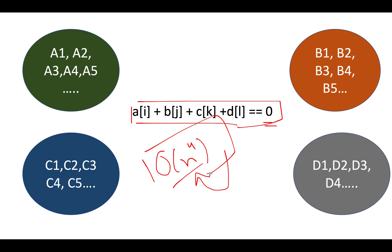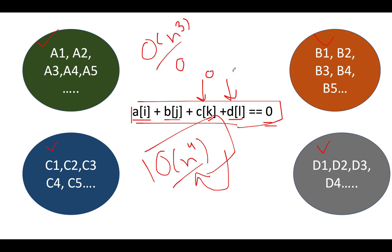Can we improve this? Yes we can. The next approach I'm going to propose is O(n^3). The first step is to sort all the elements across all four arrays. Then you create two loops, one for a and one for b. For c and d, you use a two-pointer approach. Since you've already sorted those arrays, you keep k as 0 and l as d.length - 1 as starting points. With each iteration, k and l are adjusted depending on the current sum. The time complexity for this approach would be O(n^3).